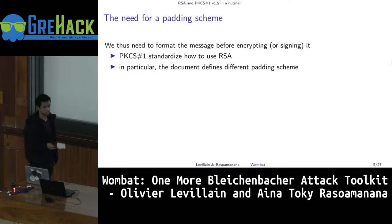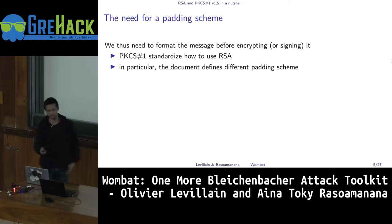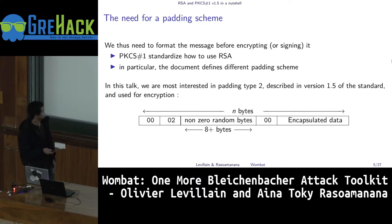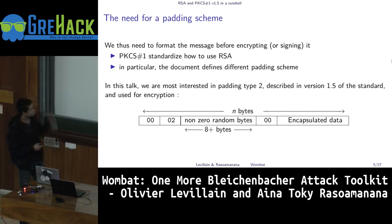PKCS#1 is a standard that describes how to use RSA. It describes the use of padding before encryption. The padding scheme varies depending on the version of PKCS#1. In this talk, we are most interested in padding type 2 described in version 1.5 of the standard and used for encryption.